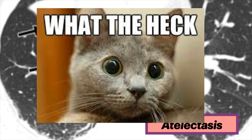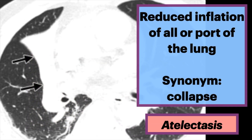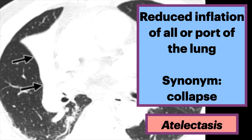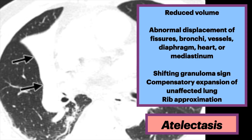Now what exactly is atelectasis? Atelectasis is reduced inflation of all or part of the lung. The synonym collapse is often used interchangeably with atelectasis, particularly when it is severe or accompanied by obvious increase in lung opacity. Reduced volume is seen and it is accompanied by increased opacity on chest x-ray or attenuation on CT in the affected part of the lung.